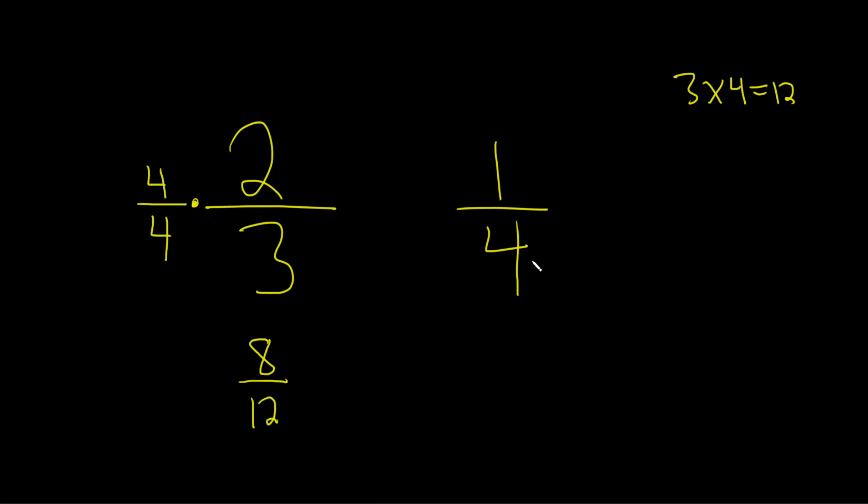Then over here we have a 4, and again we want a 12. So we're missing the 3. So we do the same thing. We multiply by 3 over 3. Then you just multiply across. 3 times 1 is 3. 3 times 4 is 12.